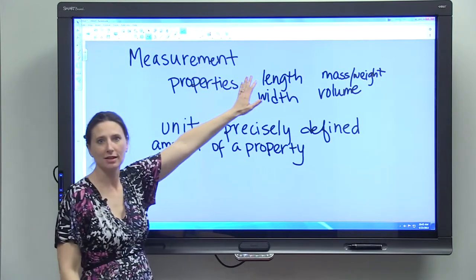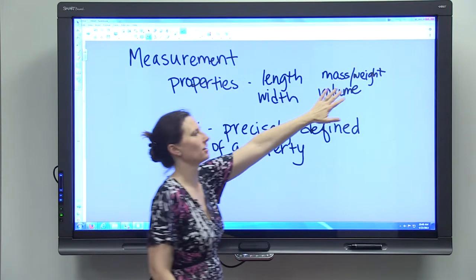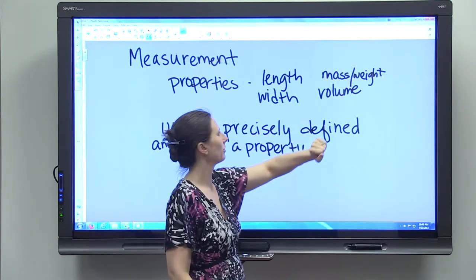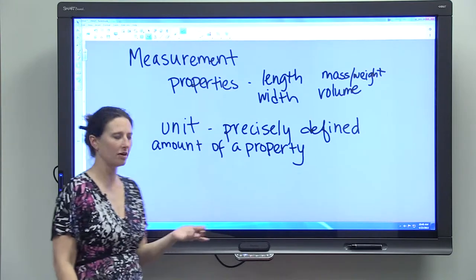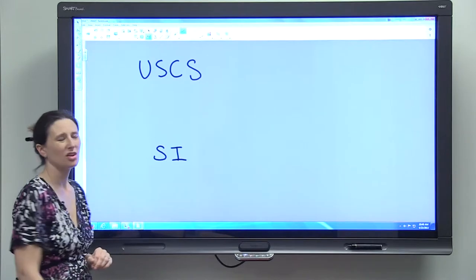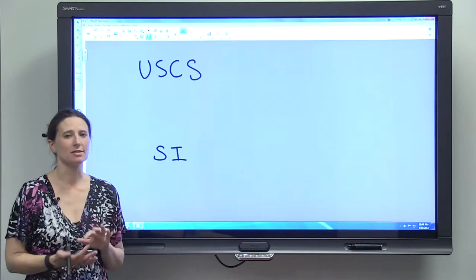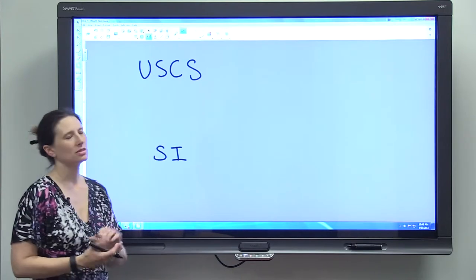So a foot is a precisely defined amount of length, a pound is a precisely defined amount of weight, a gallon is a precisely defined amount of volume. So a measurement system is a group of units.